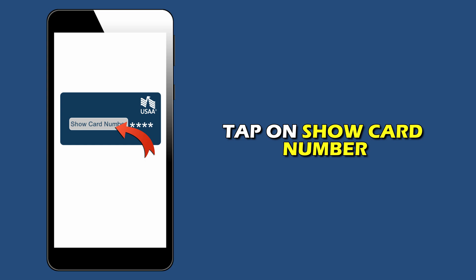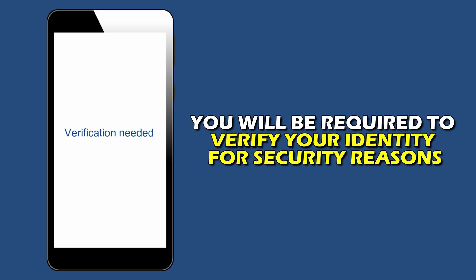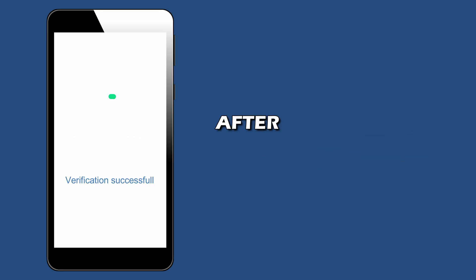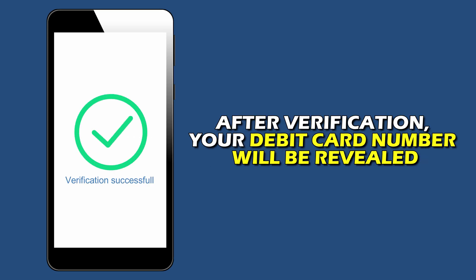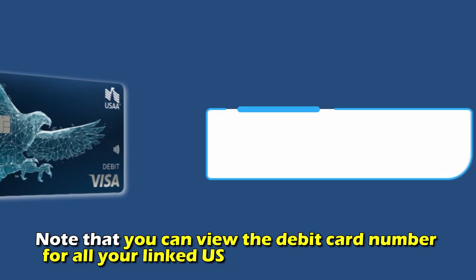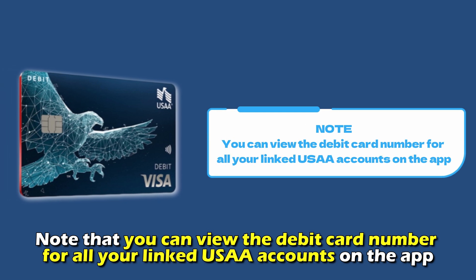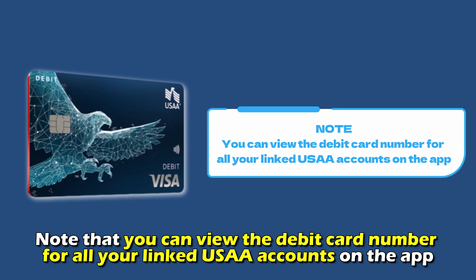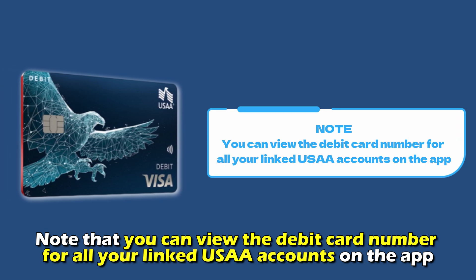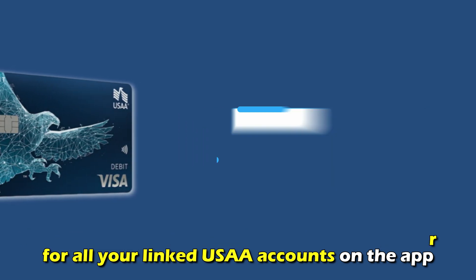Tap on Show Card Number. You will be required to verify your identity for security reasons. After verification, your debit card number will be revealed. Note that you can view the debit card number for all your linked USAA accounts on the app.